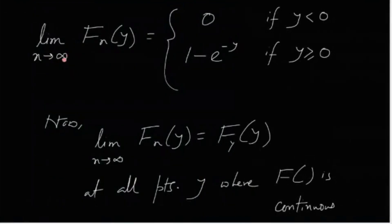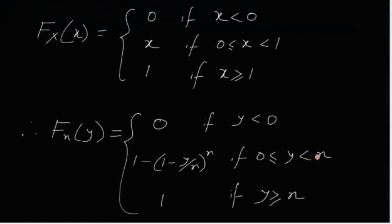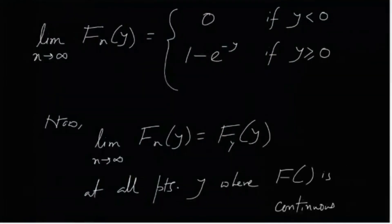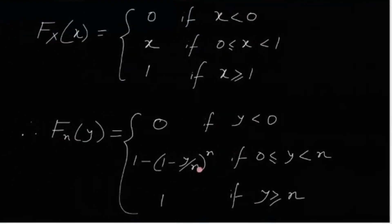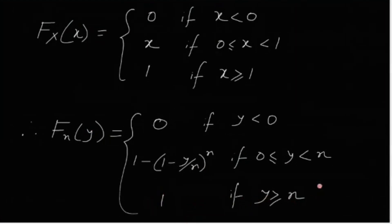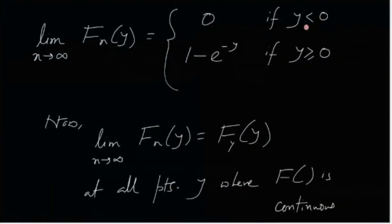Now taking the limit as n tends to infinity: Fn(y) tends to 0 if y < 0, and tends to 1 minus e^{-y} if y ≥ 0. This is because the limit of (1 - y/n)^n as n→∞ equals e^{-y}. Since n→∞, the upper boundary goes to infinity, so the function is never exactly 1 at a finite y.